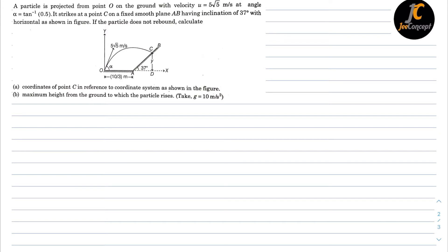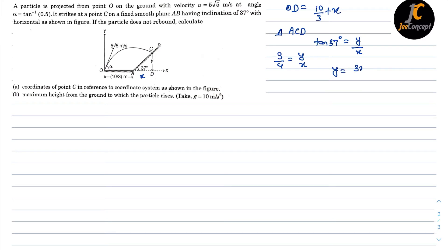In triangle ACD, let AD = x, so the distance OD will become 10/3 + x. The height is y. From triangle ACD we can apply tan θ, so tan 37° = perpendicular upon base, which gives 3/4 = y/x, so y = 3x/4. This is the first relation between x and y.